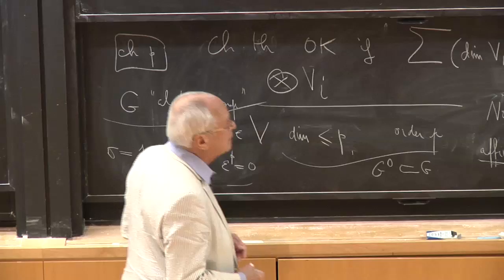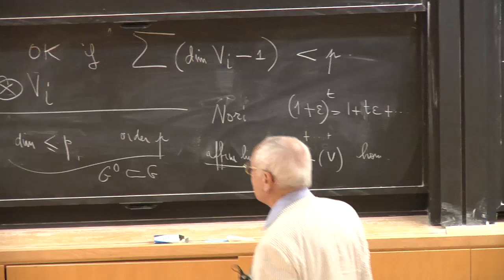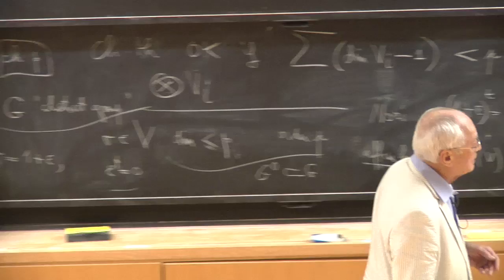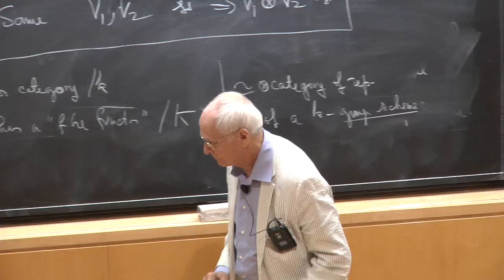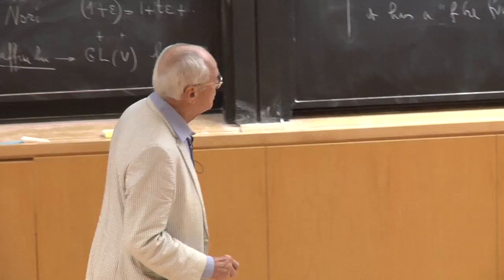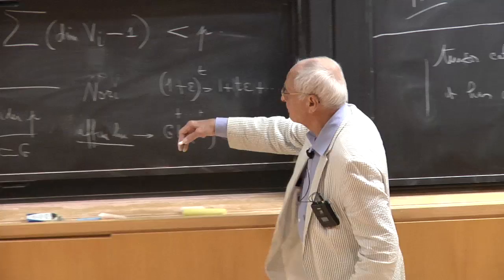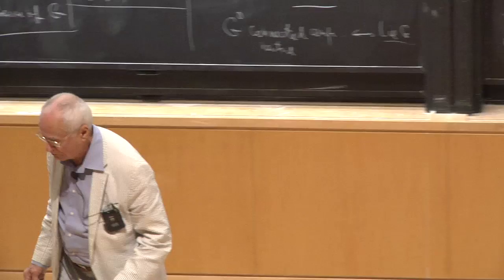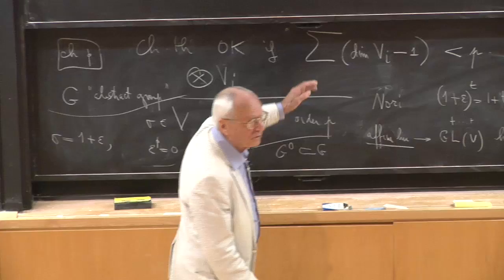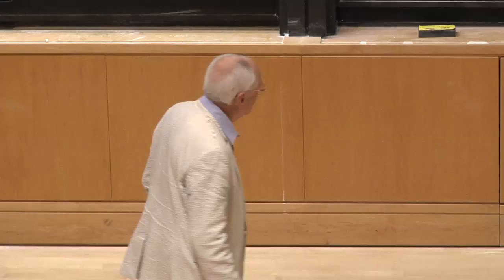But now what about Chevalley–Deligne in characteristic p? If I start with semi-linear representations, the Deligne theorem applies, but it gives me a k-group scheme which may have nilpotent elements. That doesn't happen in characteristic zero, but in characteristic p it could. The proof I described does not apply to a group scheme — I don't know if the corresponding statement for Lie algebras is true in characteristic p. I will not bet anything on that. So that's where it stands now.